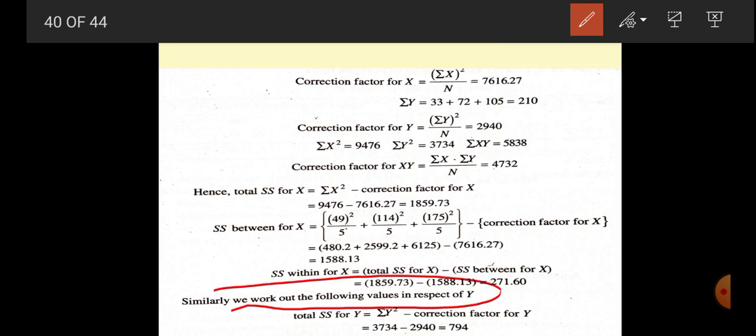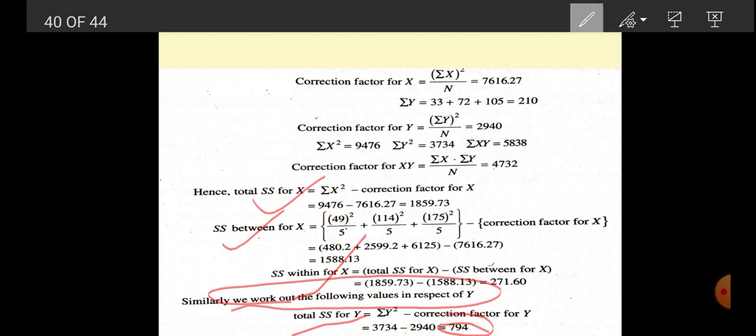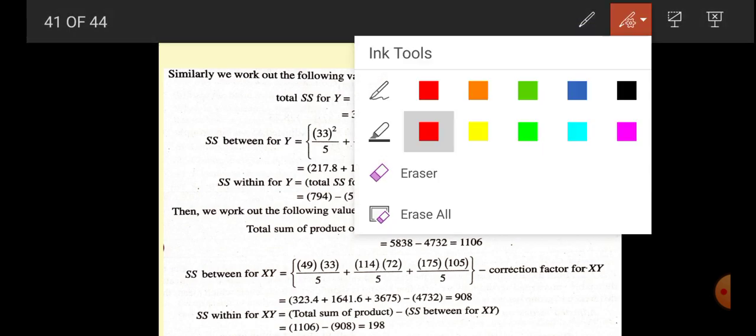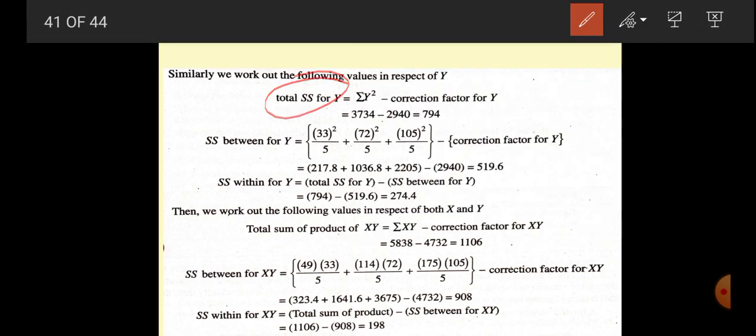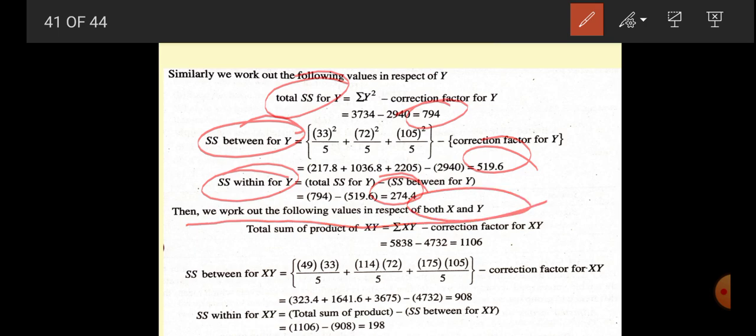Similarly we will work out for Y. For Y also, we will find out total SS between for Y and SS within for Y. Total SS is 794. SS between for Y is 519.6. SS within for Y is 274.4. So we will work out the same for X and Y also.